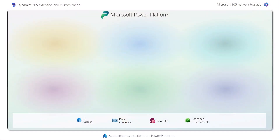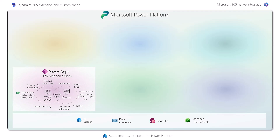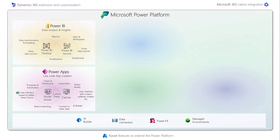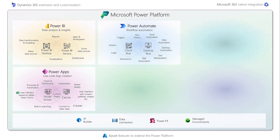The Power Platform is made up of key components. Power Apps lets you create custom business applications without writing code — it provides an easy-to-use interface to create or modify fields, form lists, and many more. Power BI is the business intelligence and data visualization tool that provides real-time insights into an organization's data. Power Automate lets you create automated processes and workflows. Power Virtual Agents is a chatbot creation tool that enables organizations to build chatbots without writing code using a visual interface.